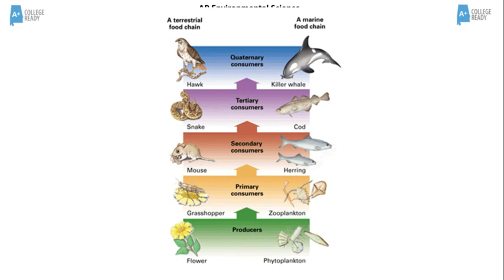In the terrestrial food chain, the flower is eaten by the grasshopper, that is then eaten by the mouse, that is then eaten by the snake, that's eaten by the hawk. Notice the levels of the food chain: the flower is the producer, the grasshopper is the primary consumer, the mouse is the secondary consumer, the snake is the tertiary consumer, and the hawk is the quaternary consumer.